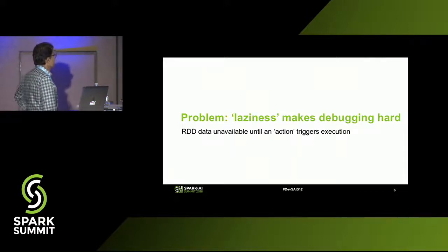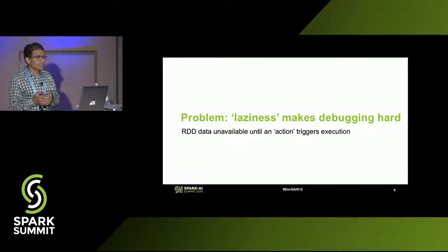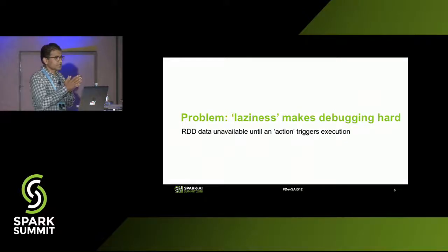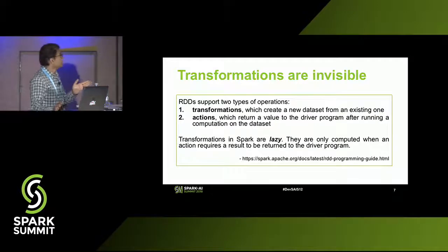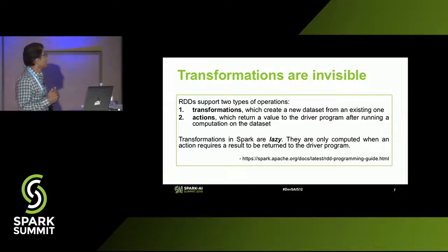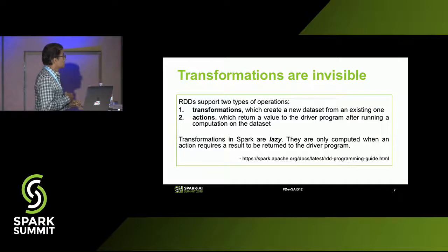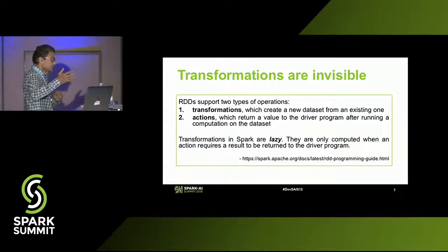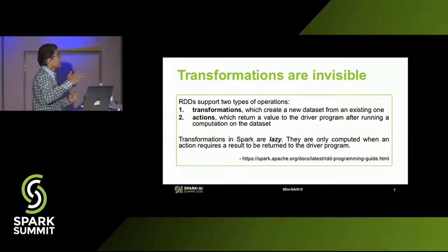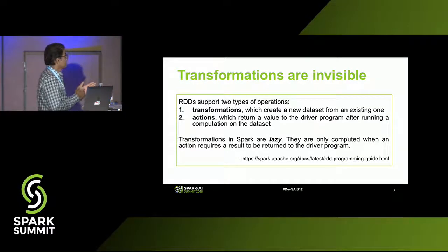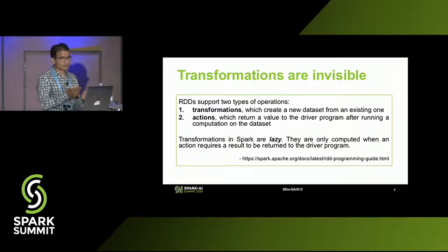So let's talk about why debugging is hard. RDDs are the fundamental data construct in Spark, and RDD data is not computed, transformed, or anything until an action takes place. Essentially, transformations are invisible to the developer. This is taken straight out of Apache Spark's documentation: RDDs support two operations — transformations, which you can see in the Spark Web UI, and actions. Transformations in Spark are lazy; they're only computed when an action requires the results to be returned to your driver.